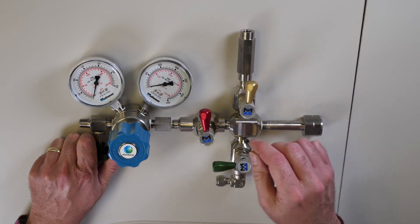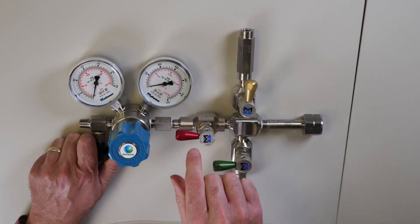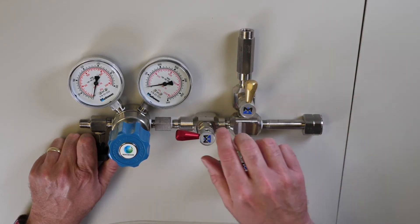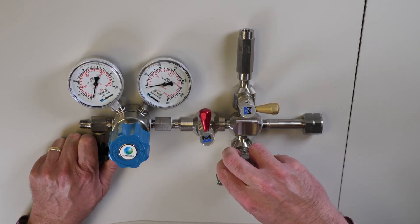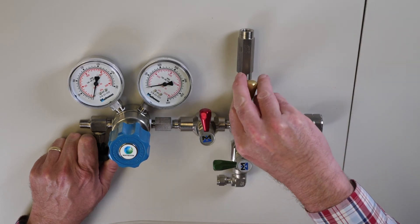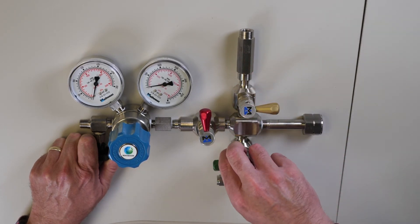Pressurize the cross purge. You can purge through the regulator. It should be cycle purged multiple times to remove atmospheric moisture and oxygen.